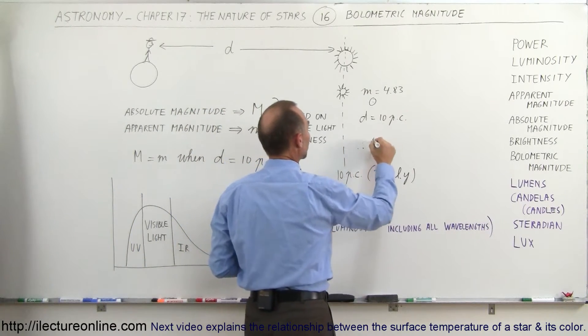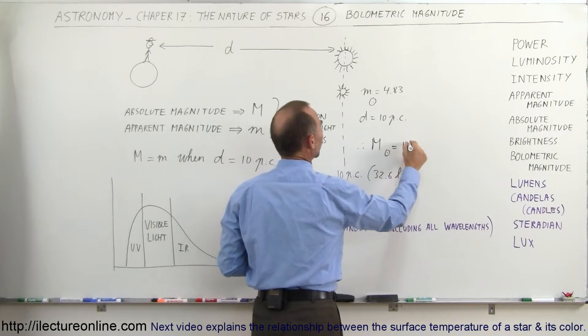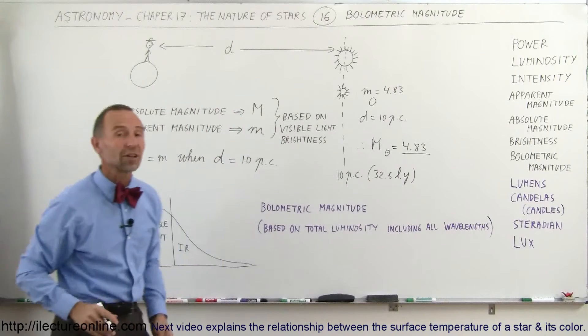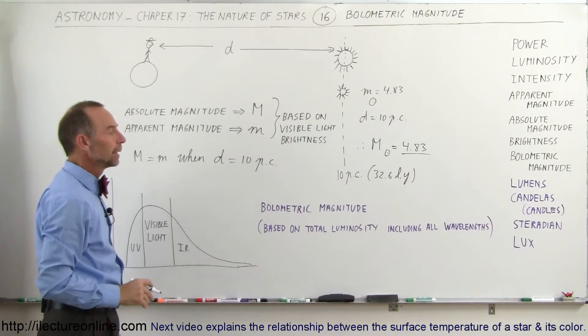Therefore, the absolute magnitude of the Sun equals 4.83. That's what it would look like if it was 10 parsecs away.